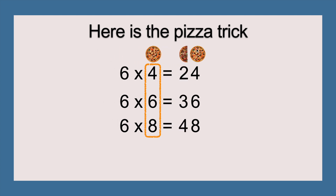Next, we're going to split the ones place in half, and we're going to use those numbers for the tens place. Four divided by two equals two. Six divided by two equals three. And eight divided by two equals four. That means the answers are twenty-four, thirty-six, and forty-eight.